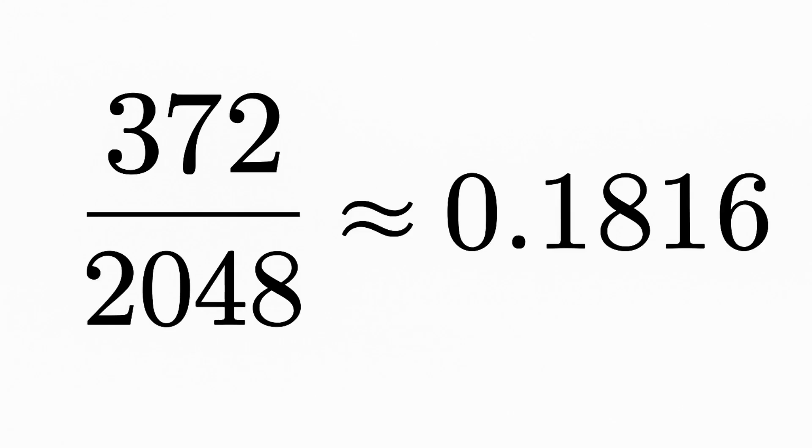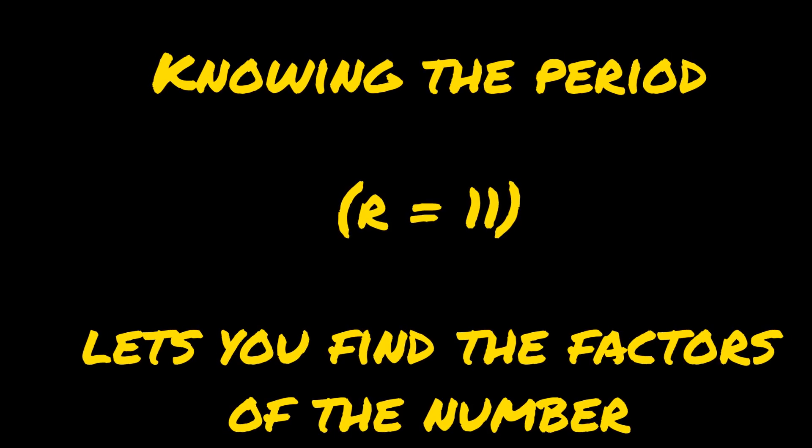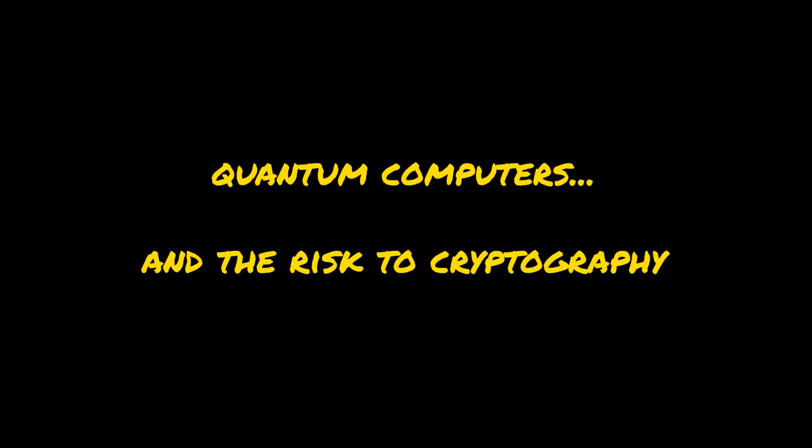So you might get 186, or twice 186, or three times 186, et cetera. If you take the fraction 372 over 2048, that gives you 2 over 11. And if you can find 11, you know the period of the sequence, and that lets you factor. So you have a fraction a over b that's approximately 2 over 11, and you want to round that fraction to the nearest fraction with small numerator and denominator. Luckily there's a classical algorithm for this called continued fractions. So you take 372 divided by 2048, apply continued fractions to round it off, get 2 over 11, and then 11 gives you the factors of the number.